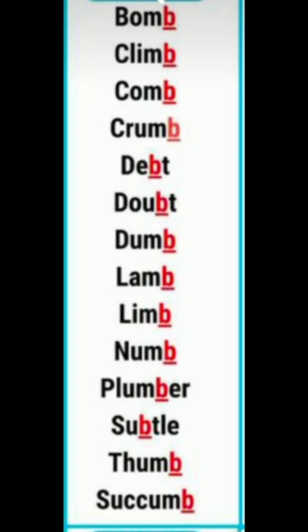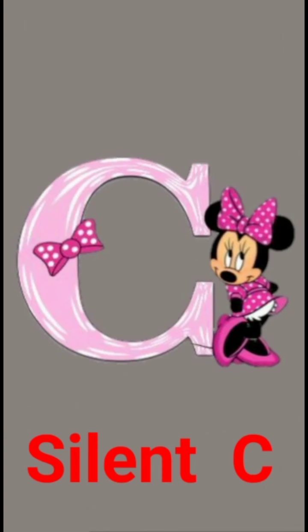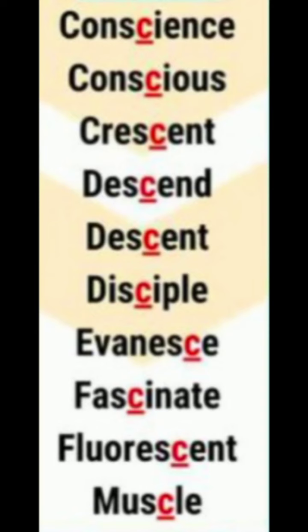Silent B — it is a consonant. In most cases, B will be at the end of the word, and before B there will be M. In rare cases, you will find E before B. But never forget — M always comes before the B. That is how we keep B mute. Examples: calm, climb, crumb, thumb, dumb, plumber.